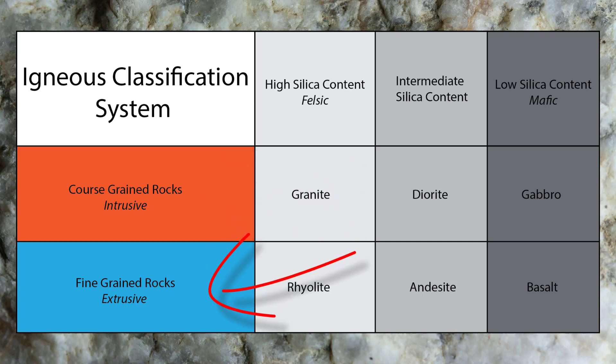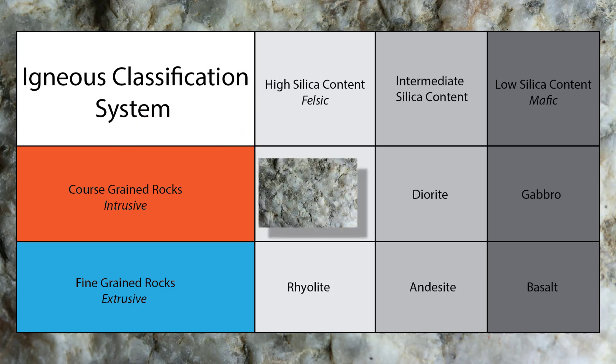And the other group of rocks have crystals that we can't see without the aid of a magnifying glass like basalt. These of course are extrusive igneous rocks. Now look at the columns. These rocks are classified by their silica content. Since granite has a higher silica content, and since it is an intrusive igneous rock, it goes here. And since basalt has a lower silica content, and is an extrusive igneous rock, it goes here.